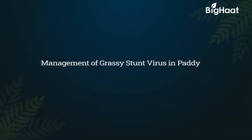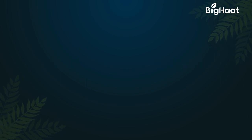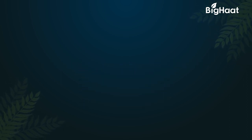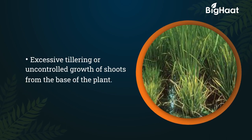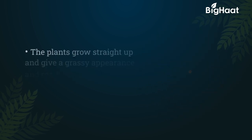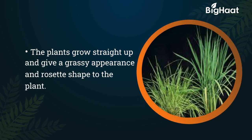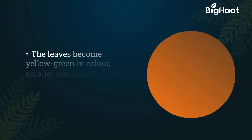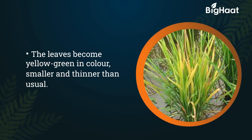Management of Grassy Stunt Virus in paddy. The disease causes excessive tillering or uncontrolled growth of shoots from the base of the plant. The plants grow straight up and give a grassy appearance and a rosette shape. The leaves become yellow-green in color, smaller and thinner than usual.